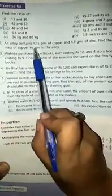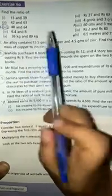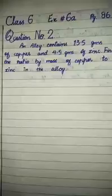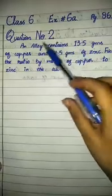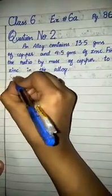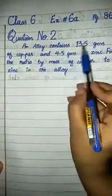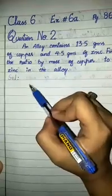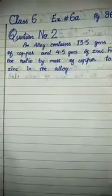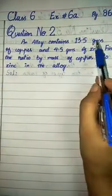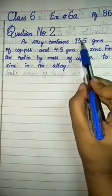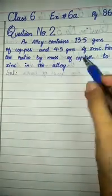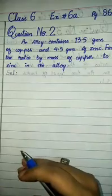Copper to zinc, not zinc to copper. Okay, start. We will write the question. Students, you will write the question, then you will write solution. Solution. First information is about copper, you will write that information, and then the second information is about zinc. These grams are given in decimal points, so first we will simplify them, then we will write them in ratio form.